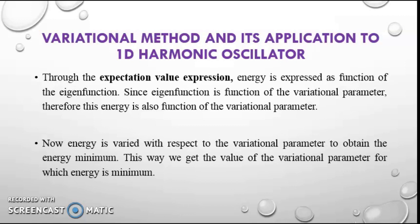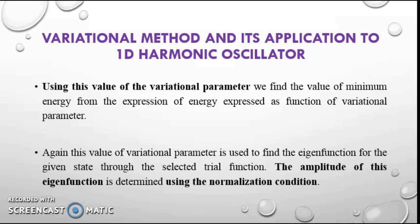Through the expectation value expression, energy is expressed as a function of the eigenfunction. Since the eigenfunction is a function of the variational parameter, this energy is also a function of the variational parameter. Now, energy is varied with respect to the variational parameter to obtain the energy minimum. This way we get the value of the variational parameter for which energy is minimum. Using this value of the variational parameter, we find the minimum energy from the expression for energy as a function of the variational parameter. Again, this value of the variational parameter is used to find the eigenfunction for the given state through the selected trial function.